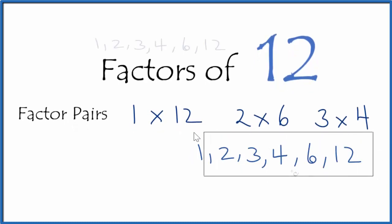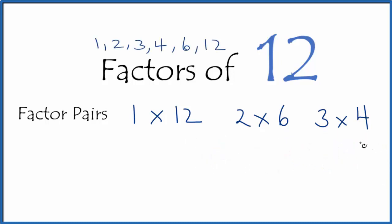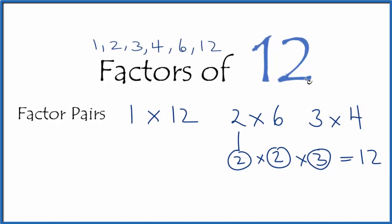Let's move these up top. To find the prime factors, we'll break this down further. So 1 and 12 aren't prime. Let's not worry about those. 2, that's a prime number. 6 is 2 times 3. Both of these are prime numbers. So 2 times 2 times 3 equals 12. These are the prime factors for 12.